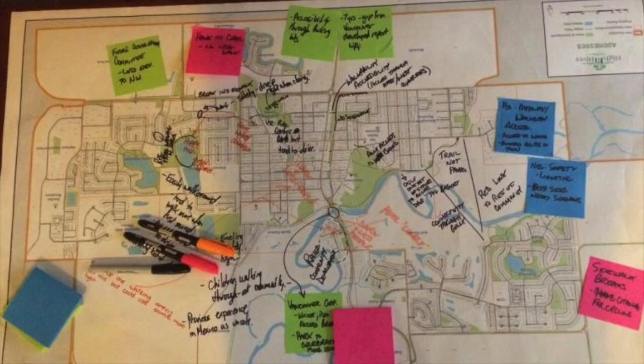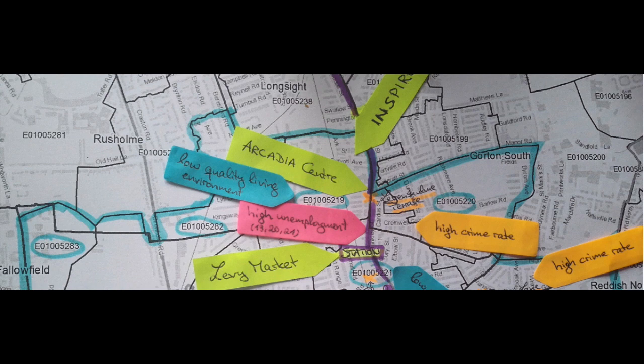Here's a closer look at using scale maps for community mapping. As you can see on this one, there are things like high crime rate, high unemployment, and low quality of living areas, all mapped directly on a pre-existing map of the city.